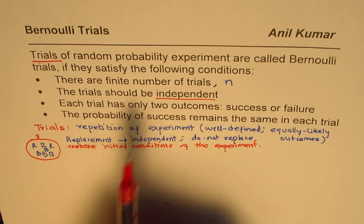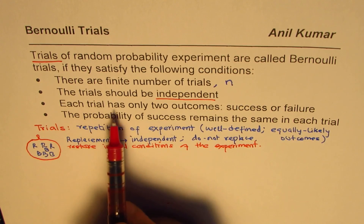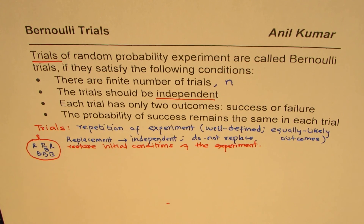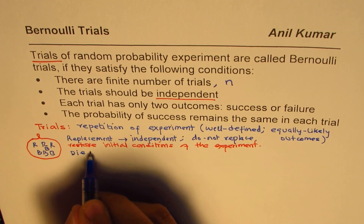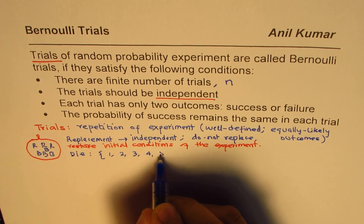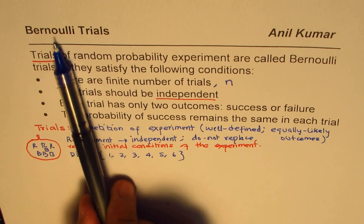Next, we have: each trial has only two outcomes, success or failure. This point is kind of simple if you are working with tossing a coin or you say winning or losing. But what happens when I throw a die? The outcomes could be one, two, three, four, five, six. Does it mean that we cannot have that as our Bernoulli's trials? So we say each trial has only two outcomes, success or failure. This has six outcomes and all are equally likely.